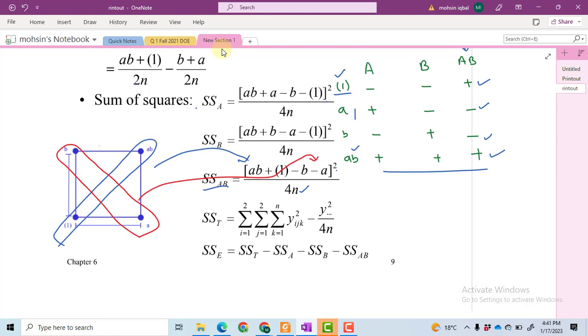After doing this, we have to calculate sum of squares total. So take the square of each and every value observation, yijk whole square, minus y dot dot dot. It means take the sum of all of the values and then their square, multiplied by N number of replications.